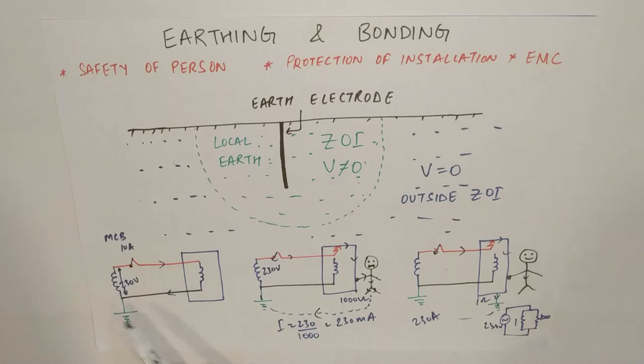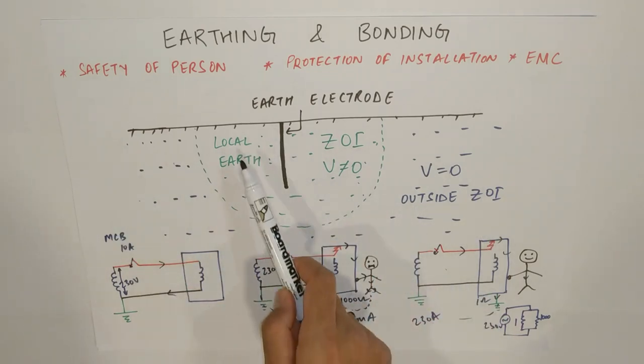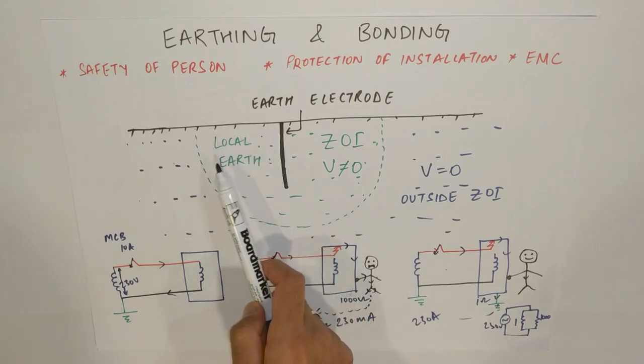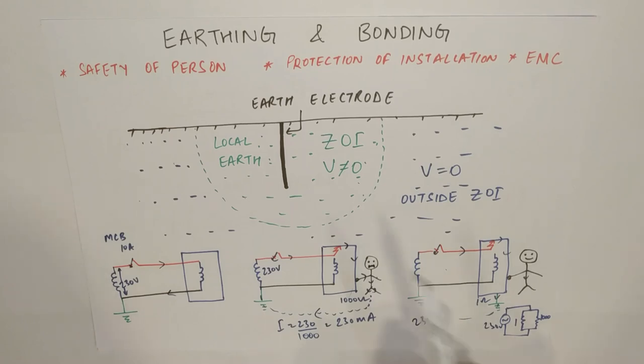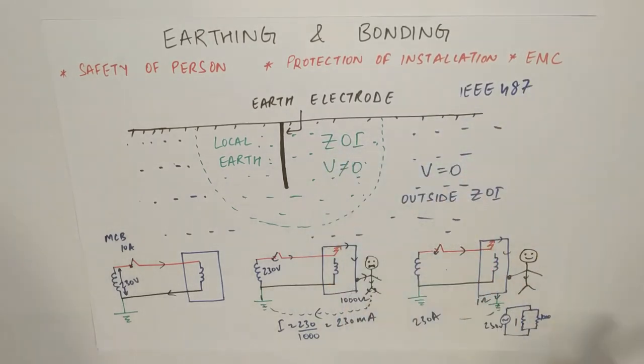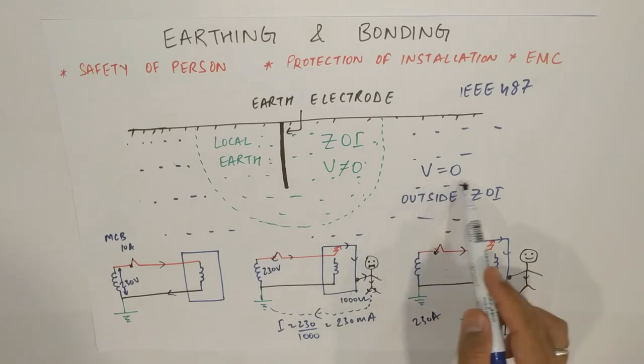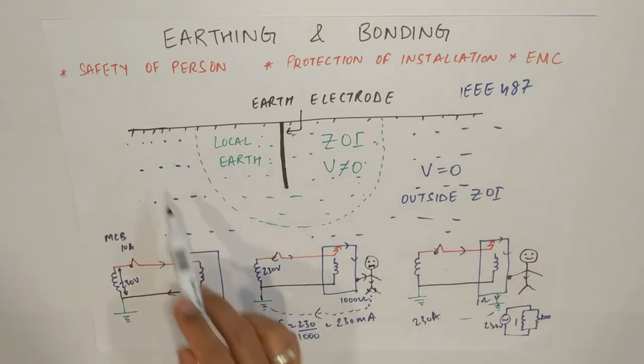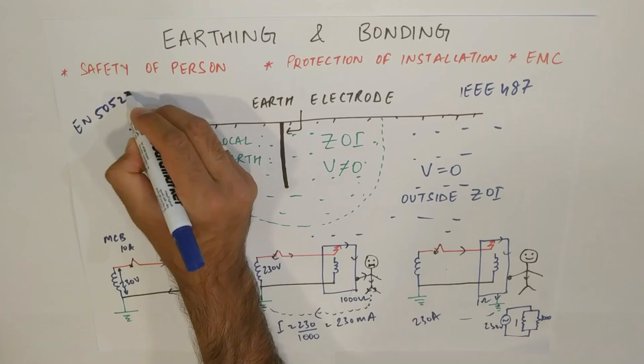Now, as this is an earth electrode. What is it? It is nothing but a conductive part which is embedded inside the earth to have an electrical contact with this earth. What is local earth? Local earth is the region or the part of the earth which is near to this electrode and which is having a potential not necessarily equal to zero. It can be, but mostly it is not. This region is known as zone of influence. To have a more feel of it, you can refer to IEEE 487 for the definition of ZOI. And the region outside this zone of influence, which is conventionally taken as voltage zero at this region, is known as remote earth or reference earth. This blue region. These definitions are provided for local earth electrode in IEC 50522. I have taken the reference from them.